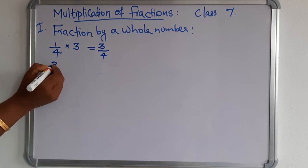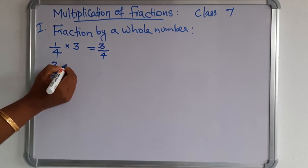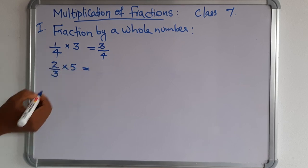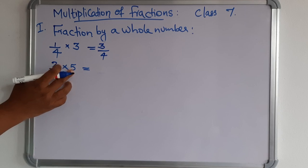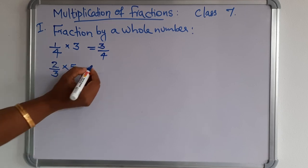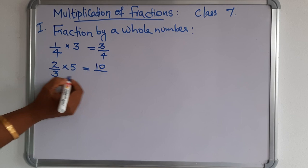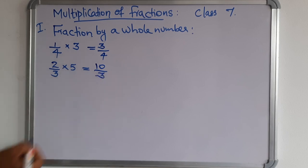Another example: 2/3 is a fraction and 5 is a whole number. Multiply the numerator with the whole number: 2 × 5 = 10. Keep the denominator the same, so the answer is 10/3.